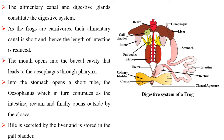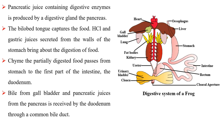Bile is secreted by the liver and is stored in the gallbladder. Pancreatic juice containing digestive enzymes is produced by the digestive gland, the pancreas. The bilobed tongue captures the food. HCl and gastric juices secreted from the walls of the stomach bring about the digestion of food. Chyme, the partially digested food, passes from stomach to the first part of the intestine, the duodenum.